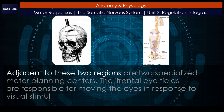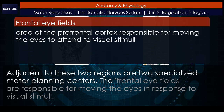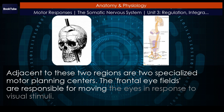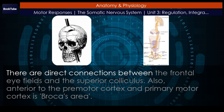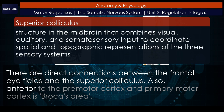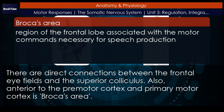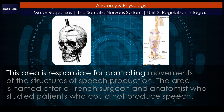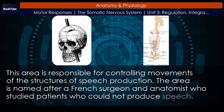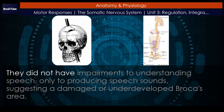Adjacent to these two regions are two specialized motor planning centers. The frontal eye fields are responsible for moving the eyes in response to visual stimuli, and there are direct connections between the frontal eye fields and the superior colliculus. Also, anterior to the premotor cortex and primary motor cortex is Broca's area. This area is responsible for controlling movements of the structures of speech production. The area is named after a French surgeon and anatomist who studied patients who could not produce speech — they did not have impairments to understanding speech, only to producing speech sounds, suggesting a damaged or underdeveloped Broca's area.